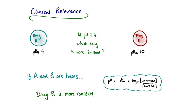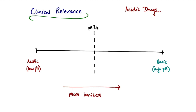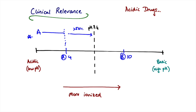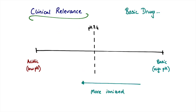If both drugs are bases, the Henderson-Hasselbalch equation is inverted, and as pKa decreases we must increase the unionized fraction — so the reverse is true: drug B is more ionized. We haven't changed the pKa values or the pH; we just need to clearly define whether the drugs are acids or bases. On a pH scale, for acidic drugs: drug A with pKa 4 reaches 50% dissociation early; continuing to pH 7.4 means it's more than 50% dissociated. Drug B with pKa 10 hasn't reached 50% dissociation by pH 7.4, so it's less ionized.